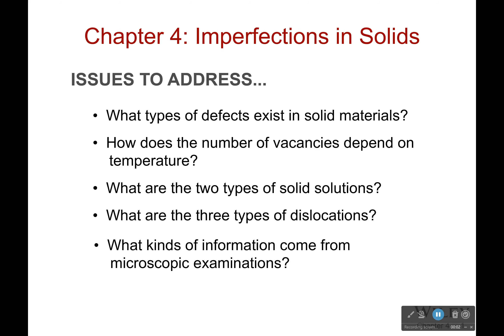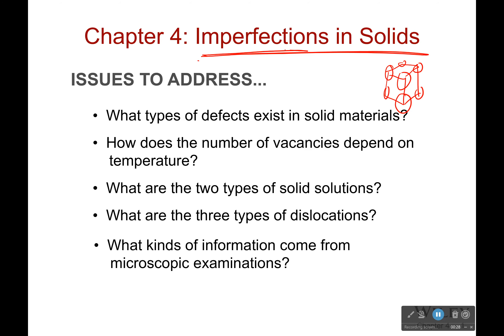Hello everyone and welcome back. We're now in chapter four of our textbook, going over imperfections in solids. Last chapter we talked about all these crystal structures — we were learning how to draw them, and one thing we ran into is that these are all perfect, absolutely perfect cubes: nothing missing, nothing out of place, nothing that shouldn't be there. But that's not real. Real life things aren't perfect, so now we're going to get into that.